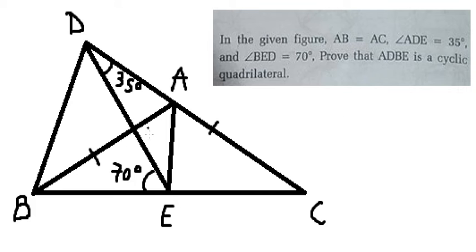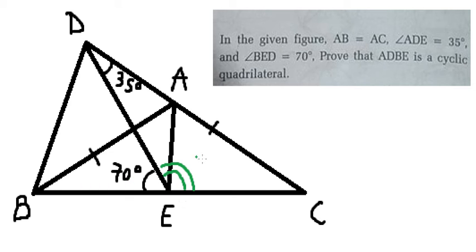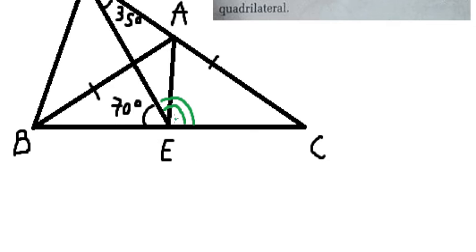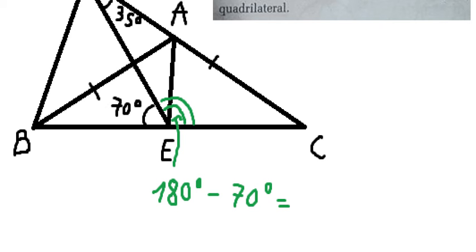If we look carefully at angle E, we see that we have 70 degrees. Because this is a straight line, the angle on a straight line is 180 degrees. So we take 180 degrees minus 70 degrees, which gives us 110 degrees.